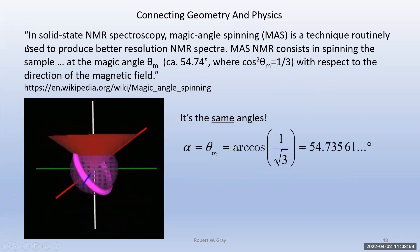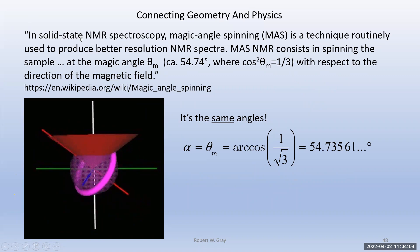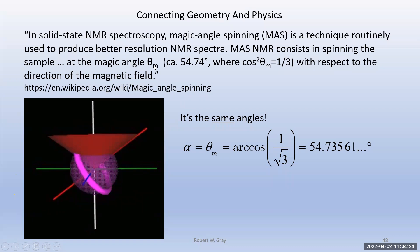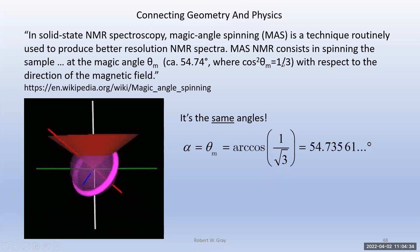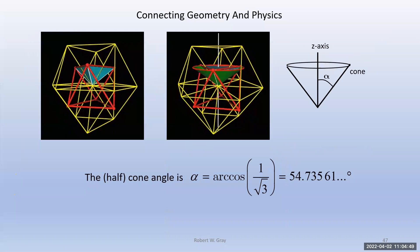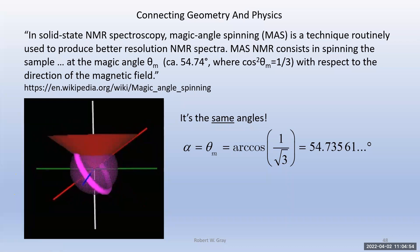I came across a Wikipedia page on magic angle spinning. In solid-state nuclear magnetic resonance spectroscopy, magic angle spinning is a technique used to produce better resolution NMR spectra. The magic angle θ_m is approximately 54.75°, where cos²(θ_m) = 1/3, with respect to the direction of the magnetic field. That's the same angle as the half-cone angle I showed from the geometry on the previous slide.